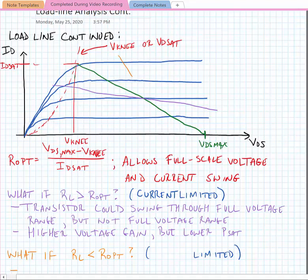We have now a slope that is steeper than the optimum, and you can see that the transistor would be allowed to swing through its full current range but not its full voltage range.